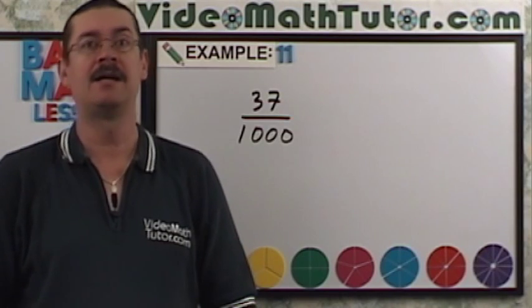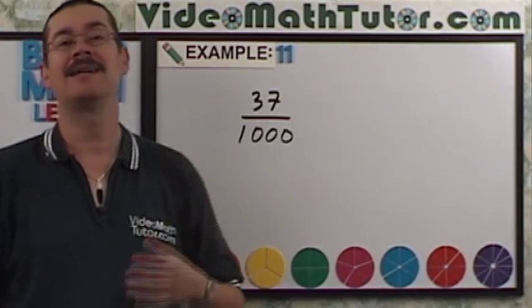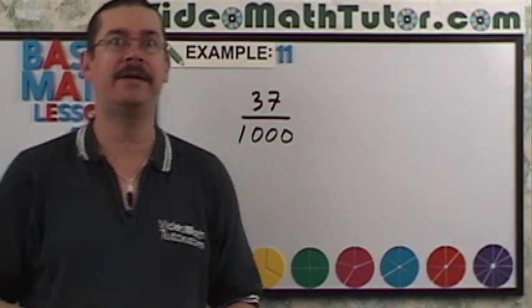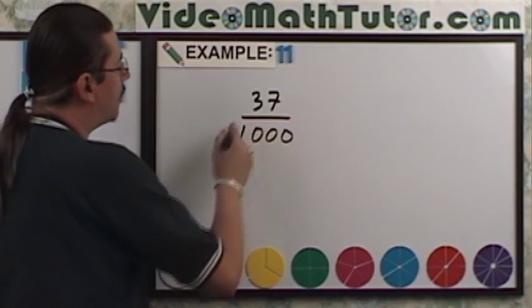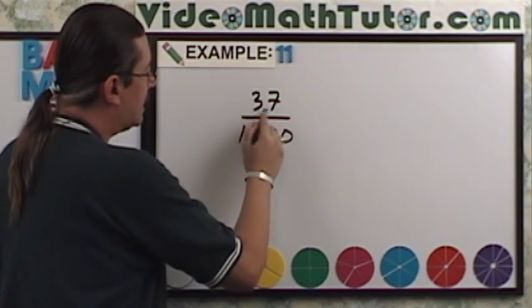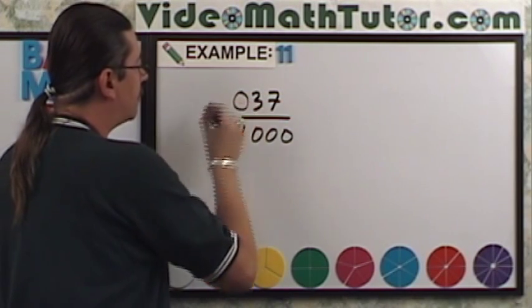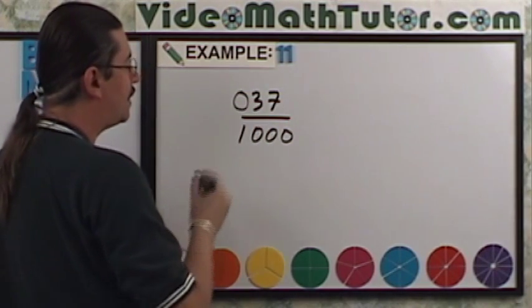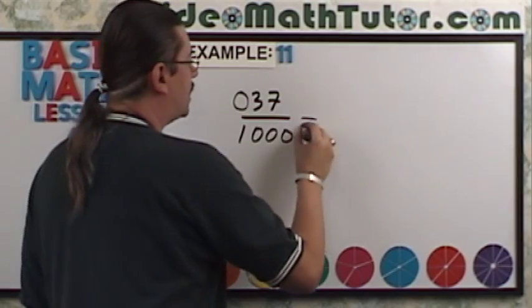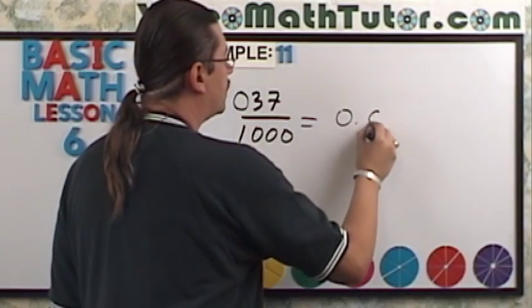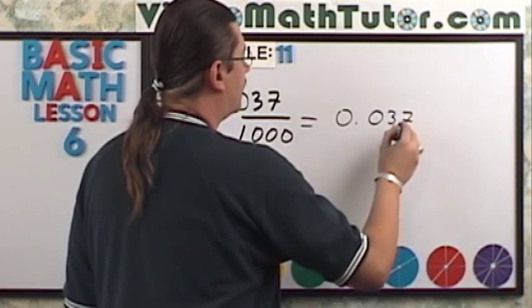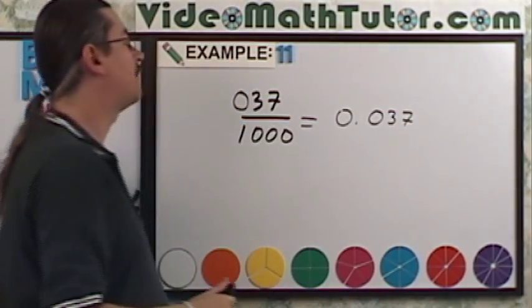For example 11, I want to rewrite this fraction in decimal form. Well, how do we do that? Well, notice that right here, I don't have enough digits to match the number of zeros down below. So I'm going to include what I like to call a leading zero right there. So now they match. So this is equal to 0.037, 37 thousandths.